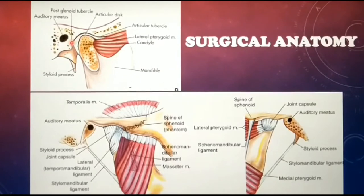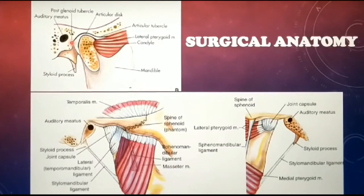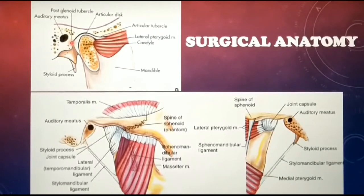The active components of the temporomandibular joint are the muscles of mastication: the temporalis muscle, medial and lateral pterygoid, and masseter. All these fall under the active components of TMJ.